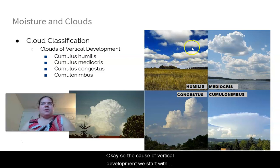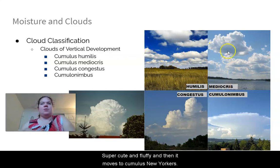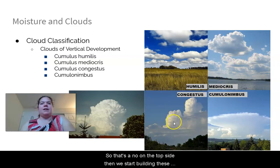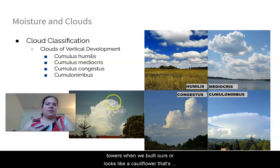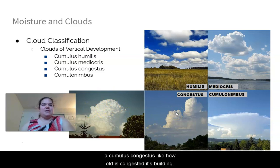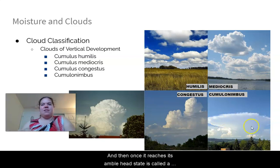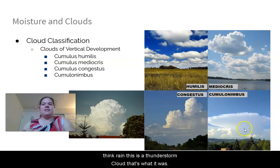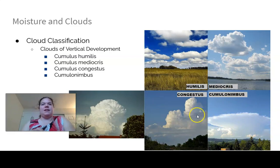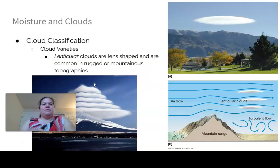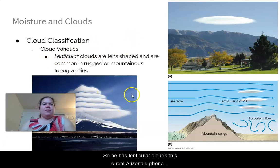Clouds of vertical development progress from cumulus (small, cute puffballs) to cumulus mediocris (slightly puffy tops) to cumulus congestus (tall cauliflower-like towers — congested and building) and finally to cumulonimbus — the anvil-head thunderstorm cloud. When you see the word nimbus, think rain.